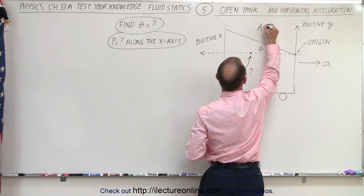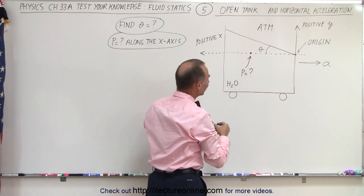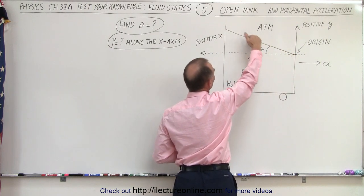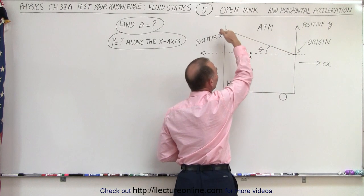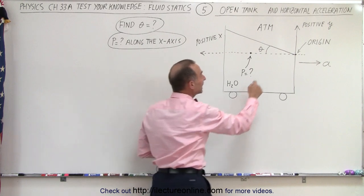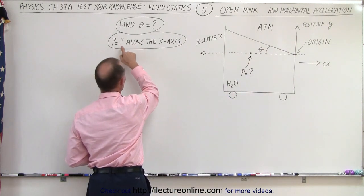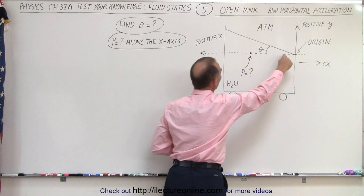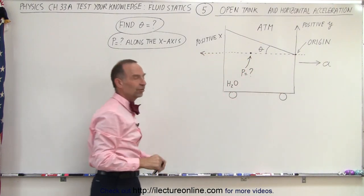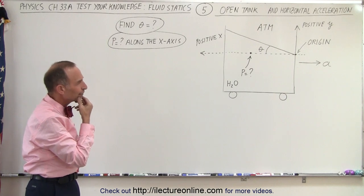Here we have atmospheric pressure. What will happen is that the water at the top of the tank will actually slope up to the left. The question is: what will be the angle of that slope, and in addition we're trying to find the pressure along the horizontal positive x-axis. How do we do that?